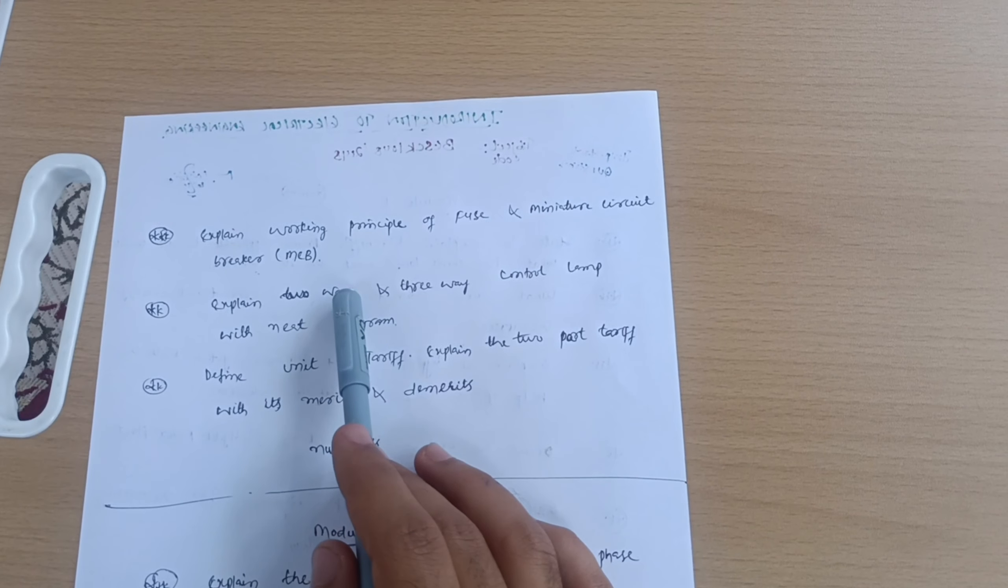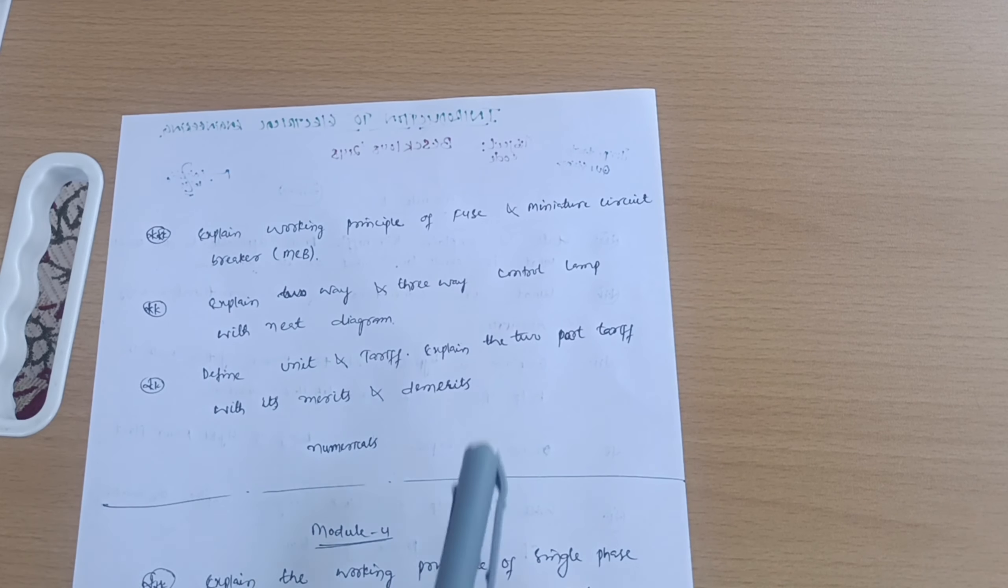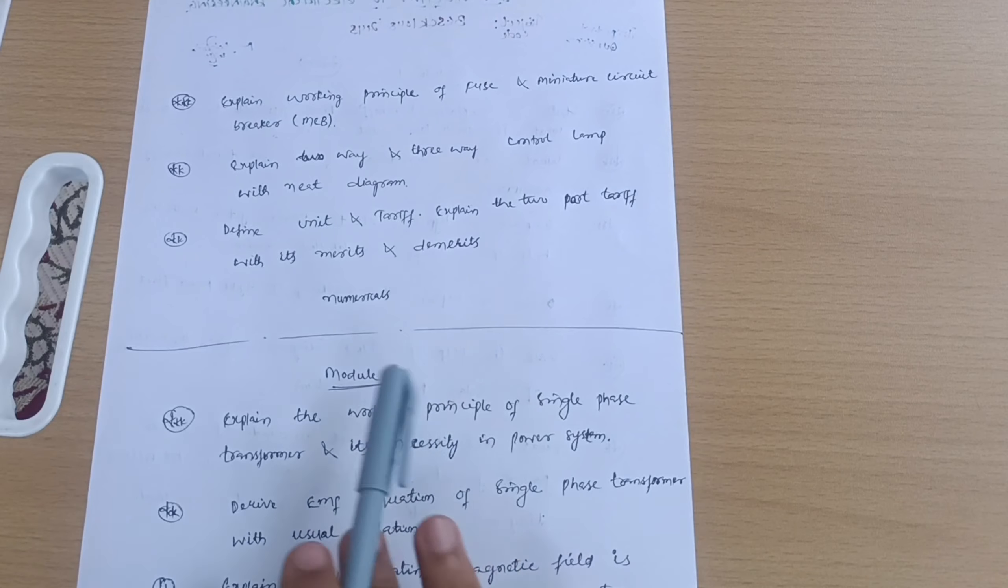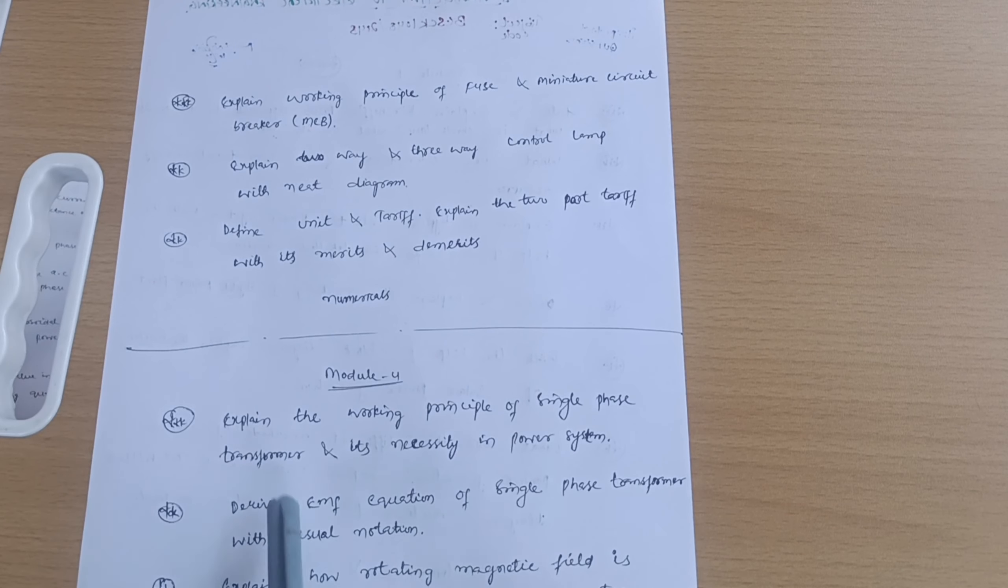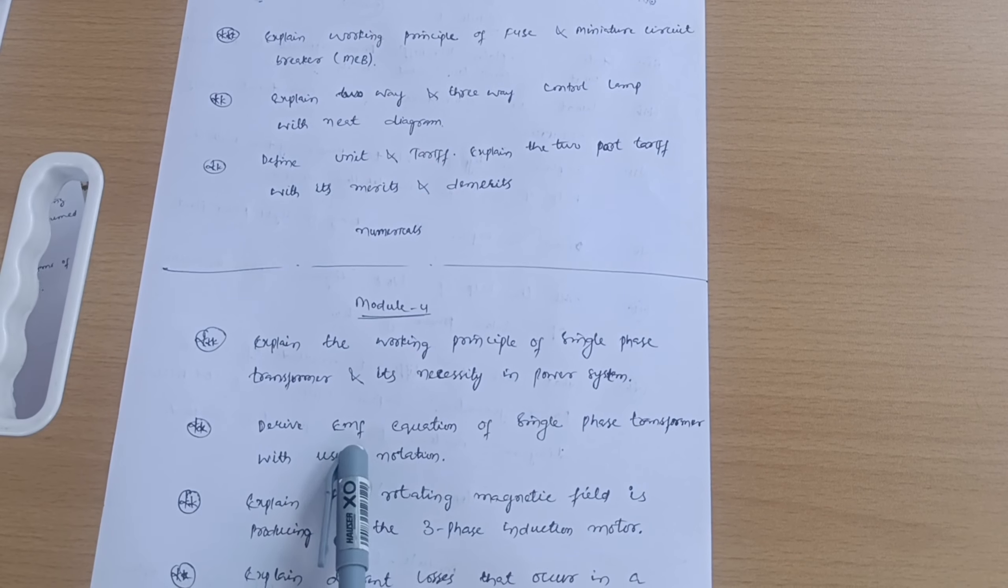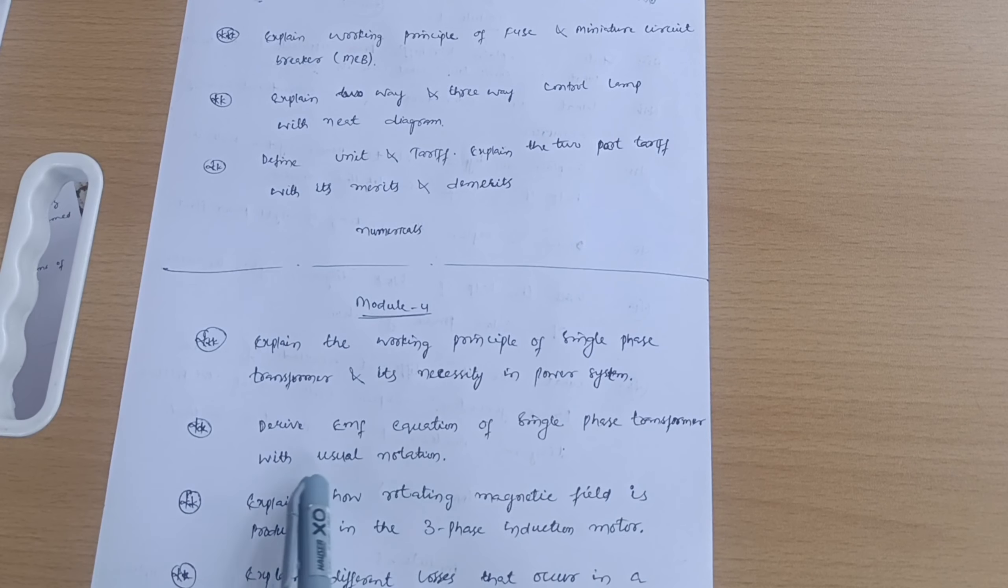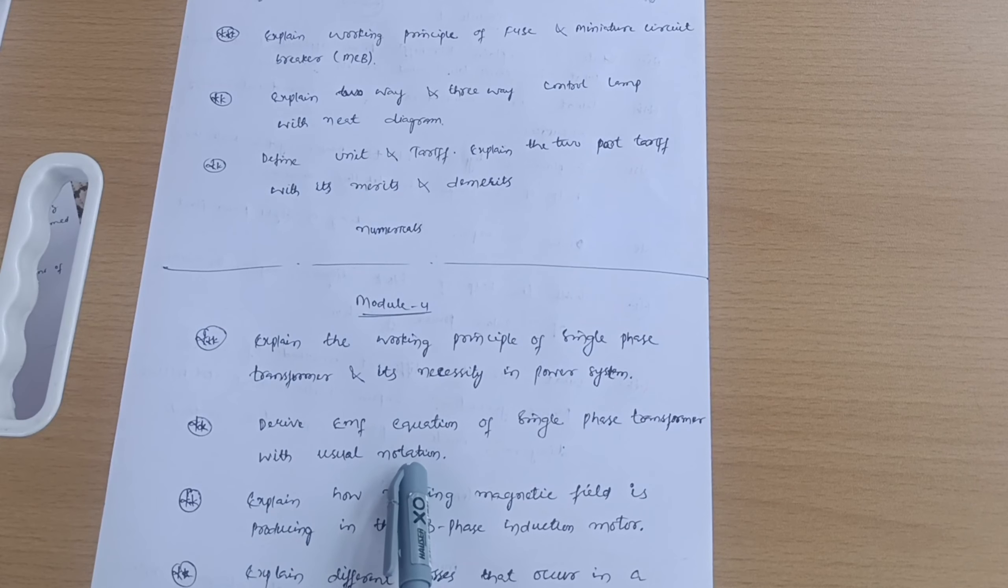These are super important questions. Go through only these five questions. Next passing module is Module 4. You have to cover: Explain the working principle of single phase transformer and its necessity in power system. Derive EMF equation of a single phase transformer with usual notation.